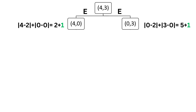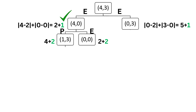A* will choose the node with the least cost, which is (4, 0). Expanding its neighbors, two operations are possible: pour water from jug A to jug B, or empty jug A. This produces state (1, 3) with heuristic value 4 and step cost 2, and state (0, 0) with heuristic value 2 and step cost 2.